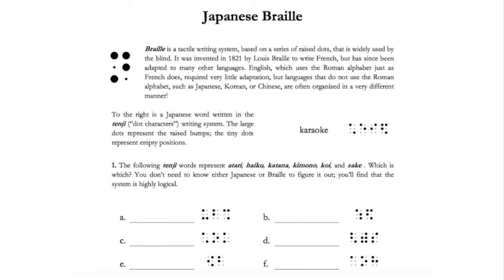Looking at the first question, the following tenji represent atari, haiku, katana, kimono, koi and saku - ignore my Japanese pronunciations. Which is which? You don't need to know either Japanese or braille to figure it out. You'll find that the system is highly logical.